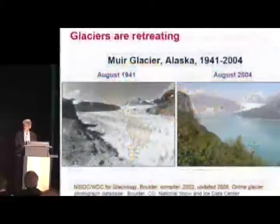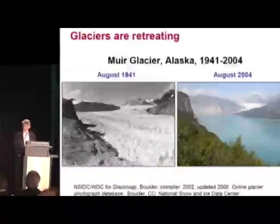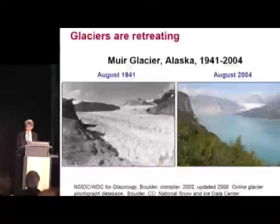Glaciers are retreating all over the world. This is a before-and-after — 1941 and 2004 — from the same spot in Alaska.